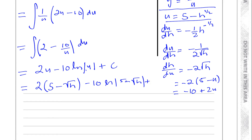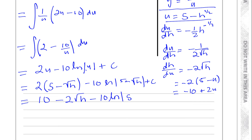Expanding: 2 times 5 is 10, and 2 times minus root h is minus 2 root h. So the expression becomes 10 minus 2 root h, minus 10 times ln|5 minus root h|, plus c. Let me separate that clearly from the previous working.